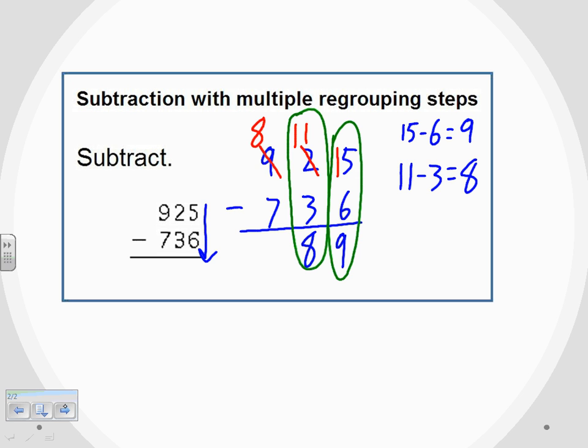And I keep moving over to the left to do the next column. Now, what was a 9 is now an 8, but that's okay because 8 minus the 7, that's right below it. That gives us a 1. So 8 minus 7 is 1.